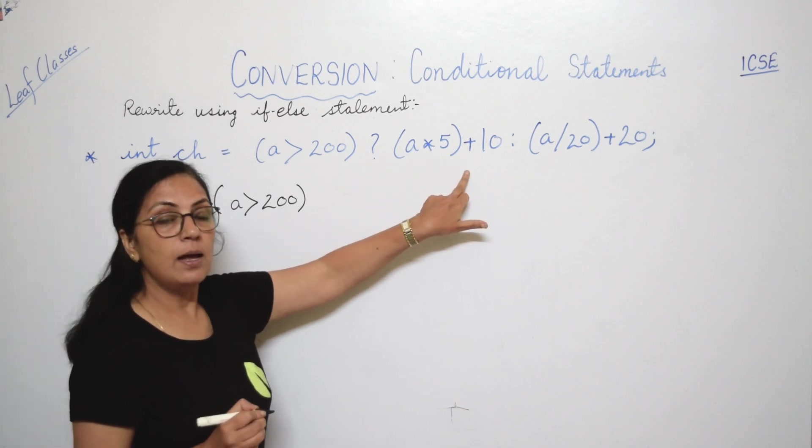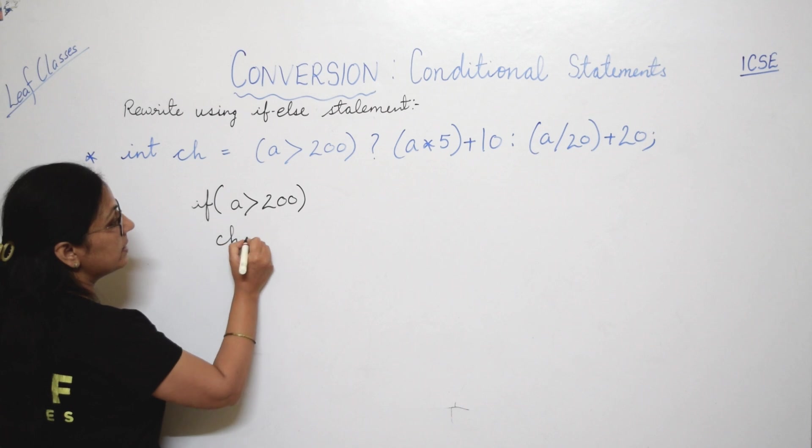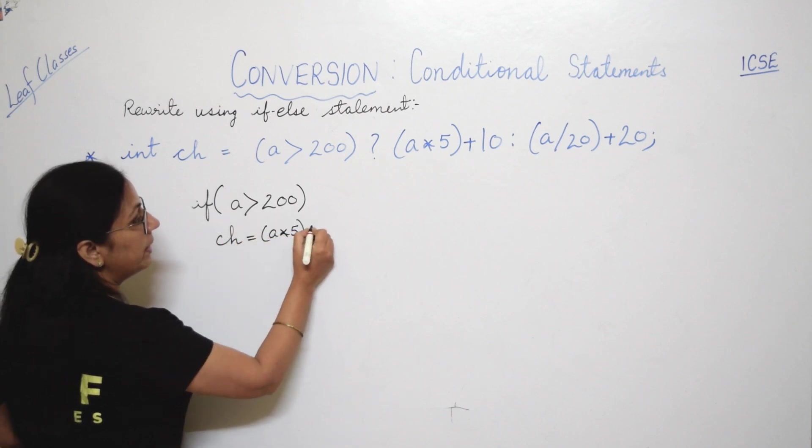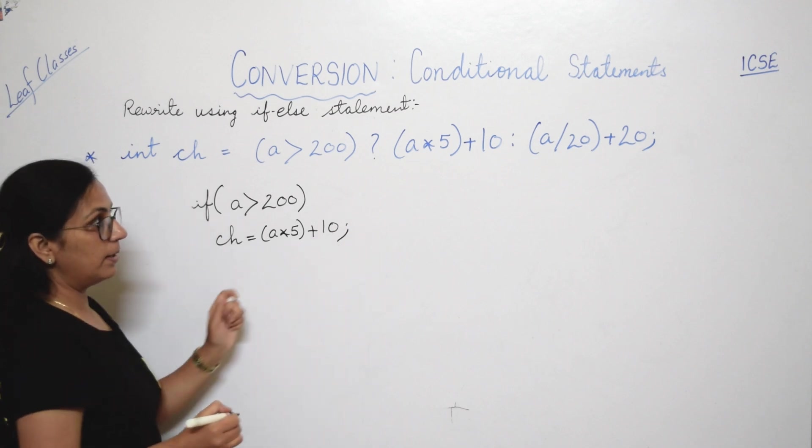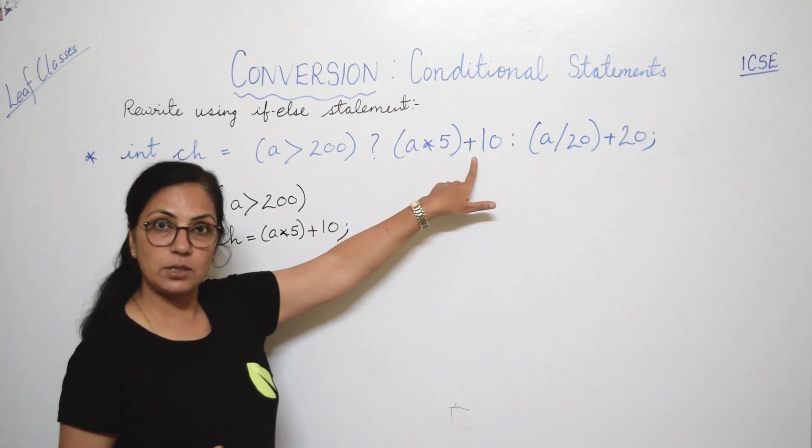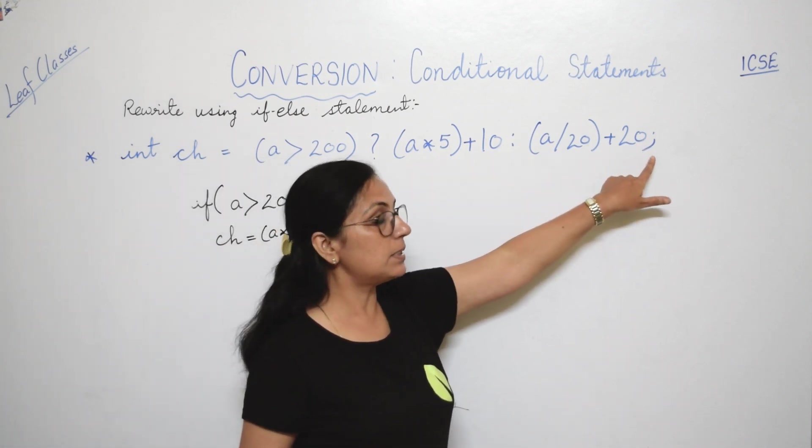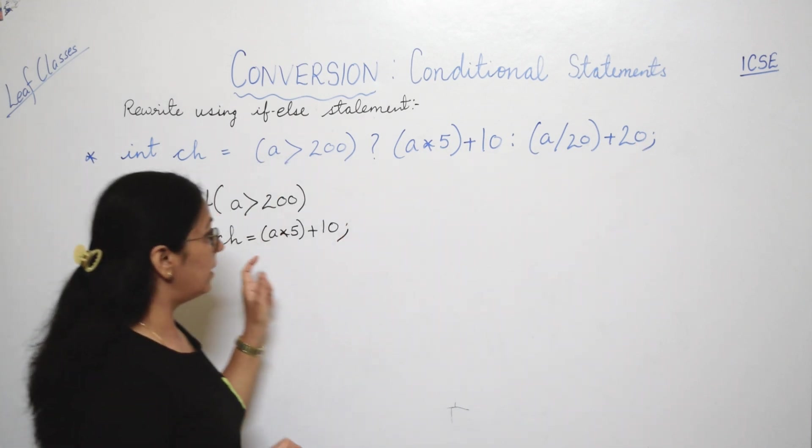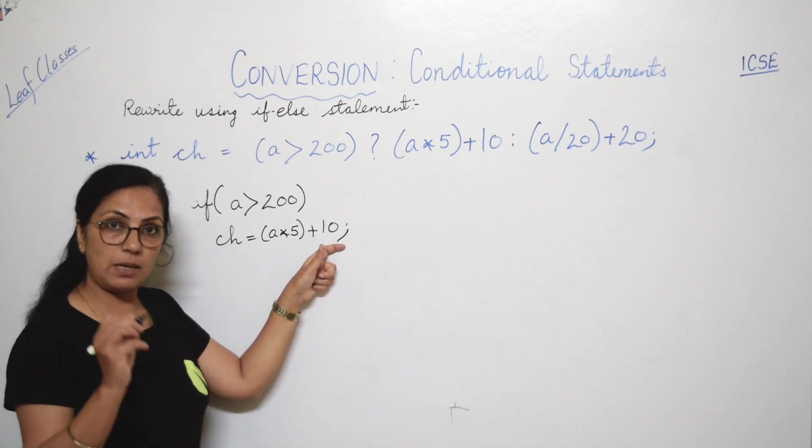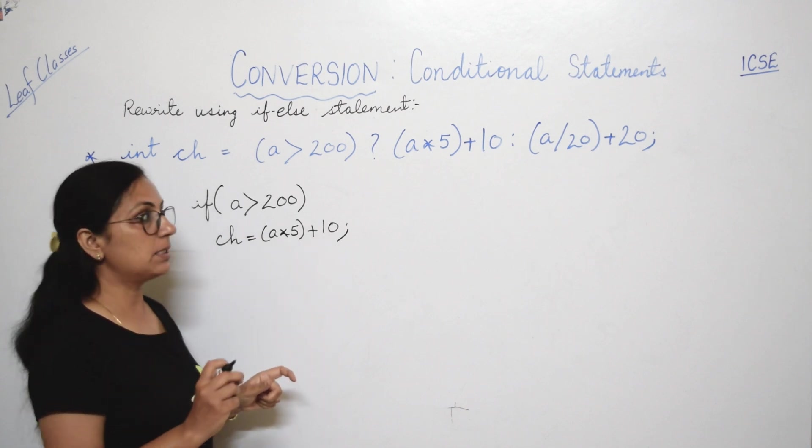Ab agar yeh condition true hai, toh yeh statement, yeh expression kisako assign hona hai? ch variable ko. So here you will write ch equals to a into 5 plus 10 and put a semicolon, right? Here semicolon is must. Although it is not mentioned here because here this semicolon is the end of the statement here. But here your statement is ending here. So all of you know semicolon is the statement terminator, right? The last character of each statement.